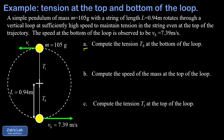In the first part we get the tension in the string as the pendulum passes through its lowest point. To get that tension we start with a force diagram at the bottom. There are two forces acting on the pendulum bob: gravity pulling straight down with magnitude mg, and the tension in the string pulling up with magnitude T_b.